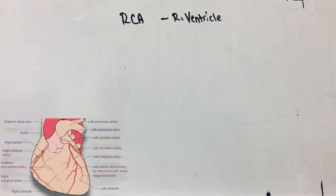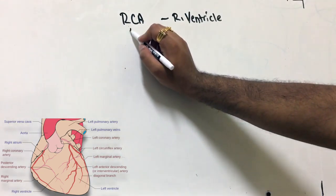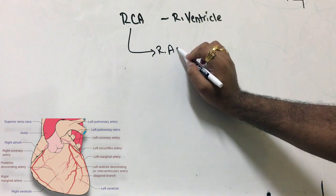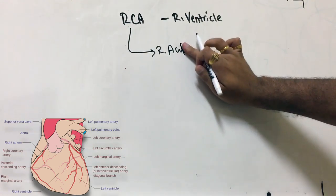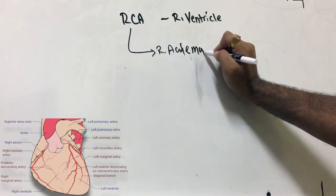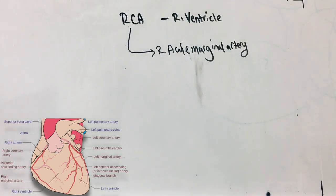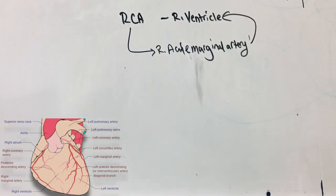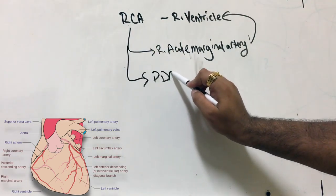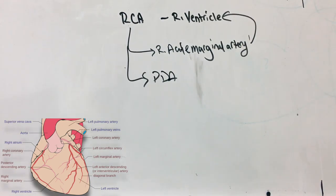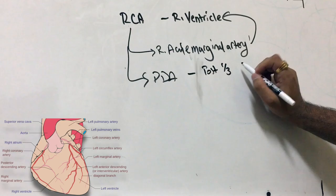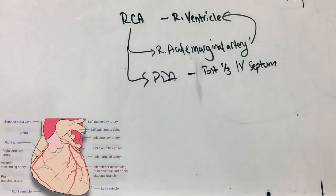The RCA gives a branch to the right acute marginal artery, which also supplies the right ventricle. The right coronary artery also gives rise to the PDA — posterior descending intraventricular artery — which supplies the posterior one-third of the intraventricular septum.